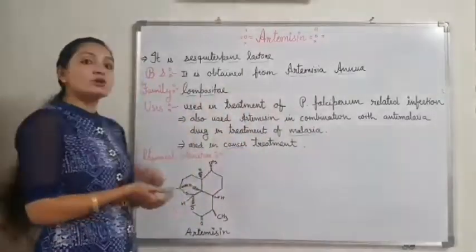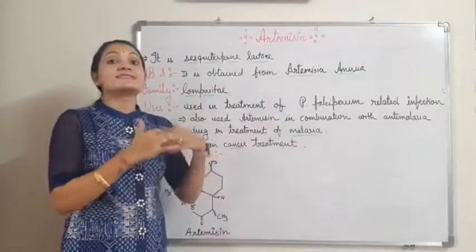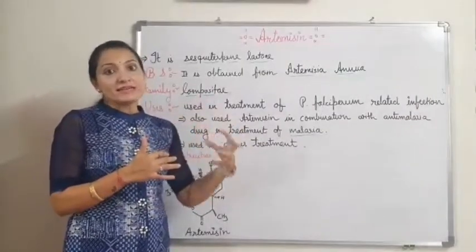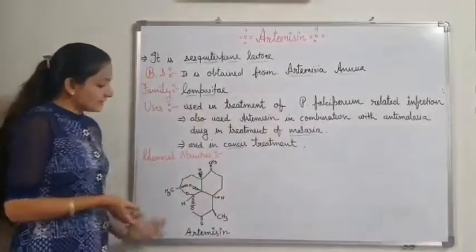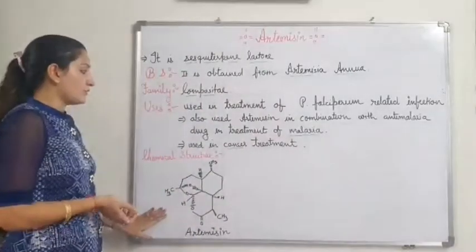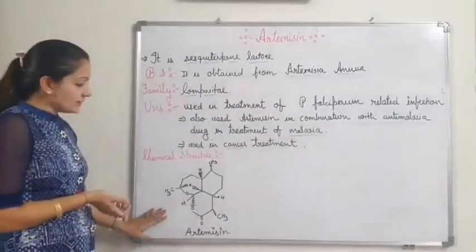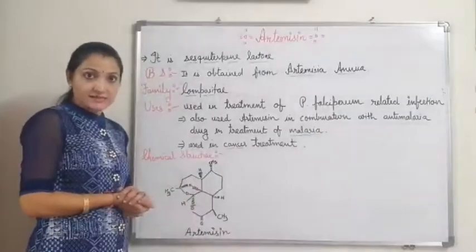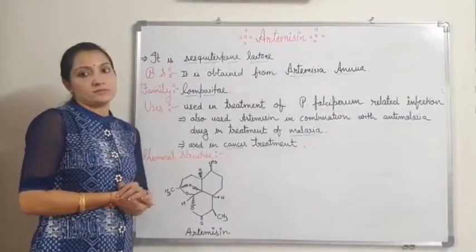It is also used in cancer treatment, so it has an effect in cancer. This is the chemical structure of Artemisinin in which a lactone ring is present and it contains isoprene units.